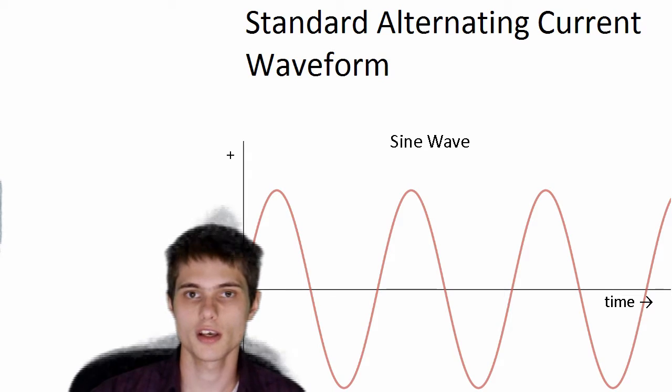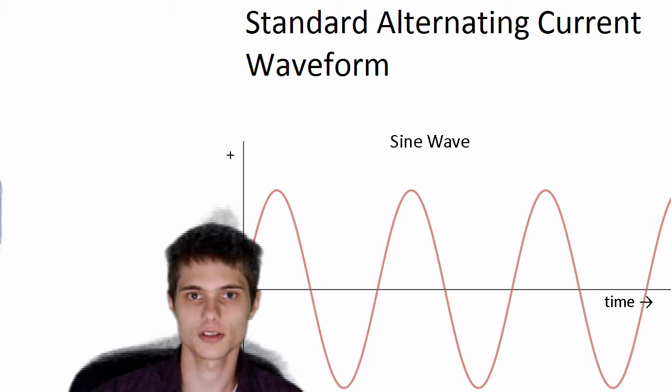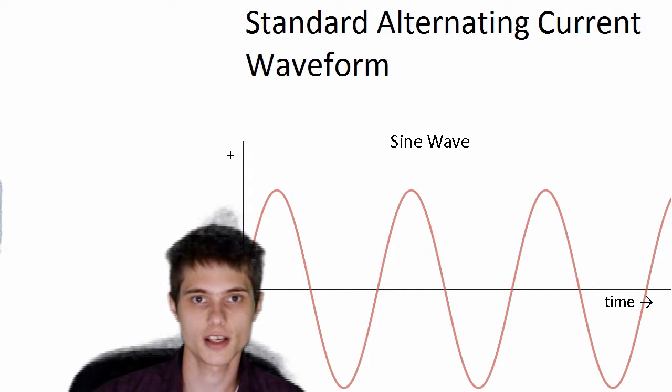So, if you were to connect this sort of voltage source to a resistor, a purely resistive load, like for example, an infrared heater, then the power factor would be one. And that's because the current of the heater, the resistor, is going to rise at the same time that the voltage is rising. So the voltage and current are completely in phase.